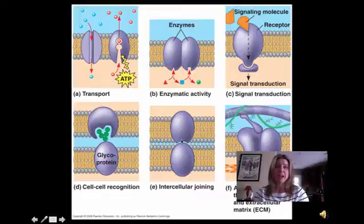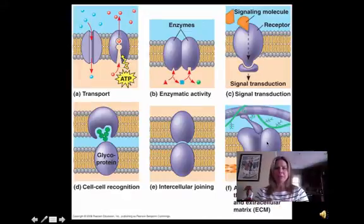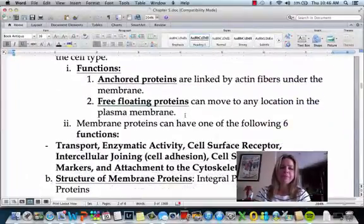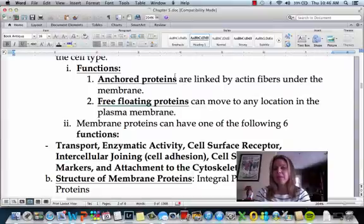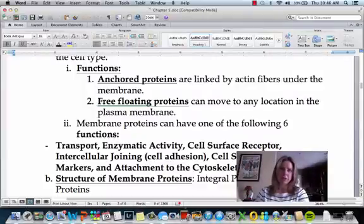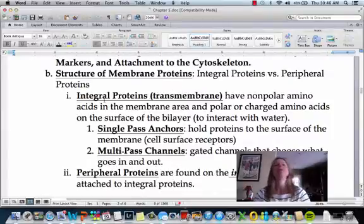Membrane proteins also assist with cell-to-cell recognition. If cells are trying to form a tissue and join together, proteins can act like labels saying 'I'm a bone cell' or 'I'm an epithelial cell.' Intercellular joining goes along with that — membrane proteins help cells attach to one another to form a tissue. Finally, attachment to the cytoskeleton helps keep the shape of the cell. Those are all the functions that membrane proteins have.